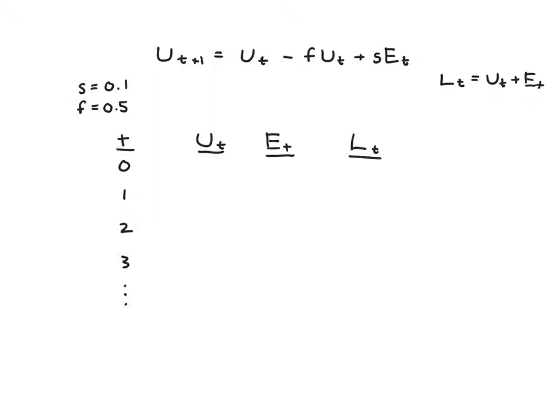Finally, in order to start doing some calculations, we're going to need to know what is s - what fraction of people separate from work each period - and what is f - what fraction of people who are unemployed find a job. I think realistically f should be pretty big - people search hard, they're going to find a job if they can, so that's probably something like 0.5.